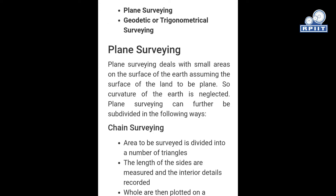Classification of survey is categorized in two categories: first is plane surveying, and second is geodetic or trigonometrical survey. Plane surveying deals with a small area on the surface of earth, assuming the surface of the land to be plane, and in this type of surveying the curvature of earth is neglected.